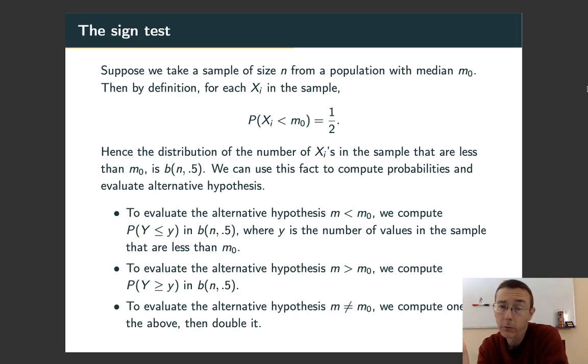So what we're going to do is take our sample and count the number of values that came out less than the hypothesized median in our sample. If it's way far away from what we expect, then we're going to reject the null hypothesis. If it's pretty close to what we would expect, then we are not going to reject the null hypothesis.